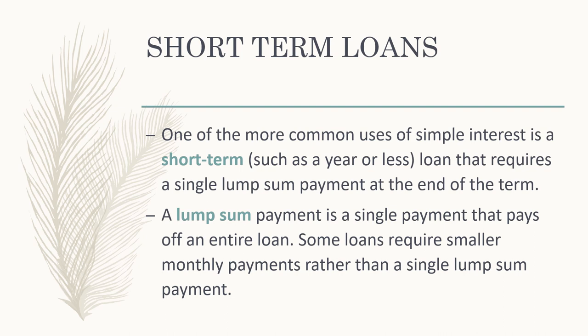One of the common uses of simple interest is a short-term loan — such as a year or less — that requires a single lump sum payment at the end of the term. For example, if you borrow money for six months, you'll make one payment at the end covering the entire loan. A lump sum payment is a single payment that pays off the entire loan. Some loans like a car loan or a mortgage require smaller monthly payments, while short-term loans require a single lump sum.